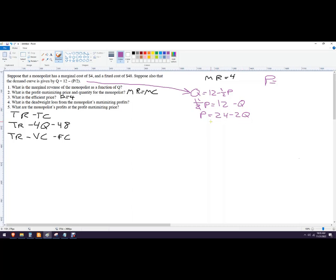So now I've got this total revenue is price times quantity. So I know what the price is. So for my total revenue function, I'm going to go 24, I'm going to multiply everything in here by Q. So 24 Q minus 2 Q squared.